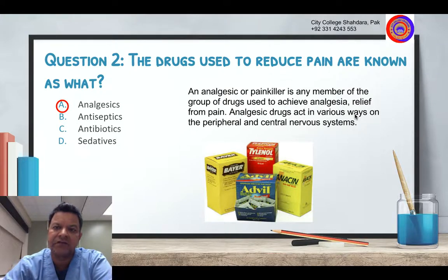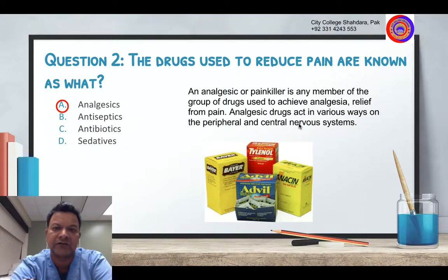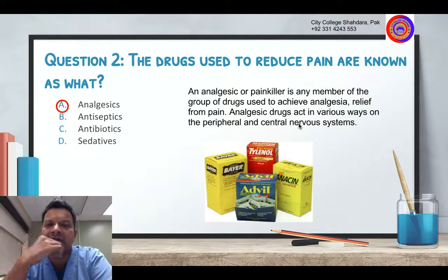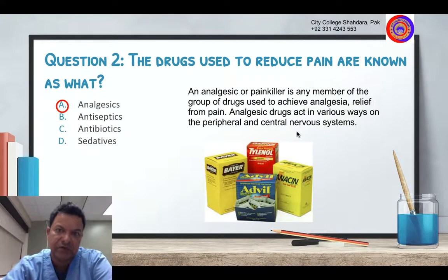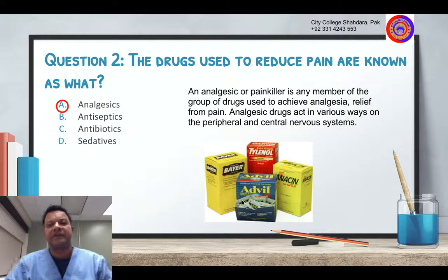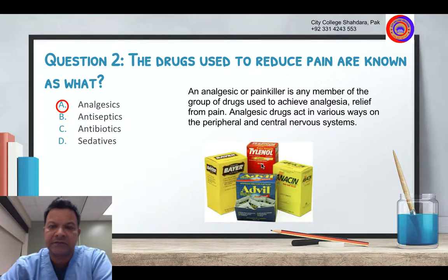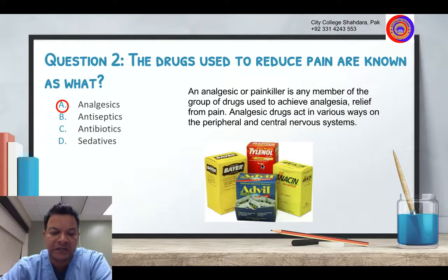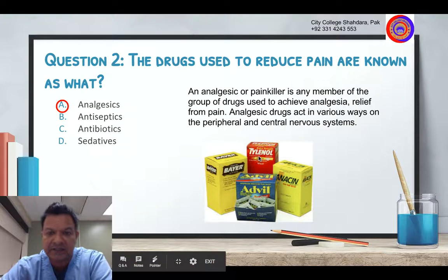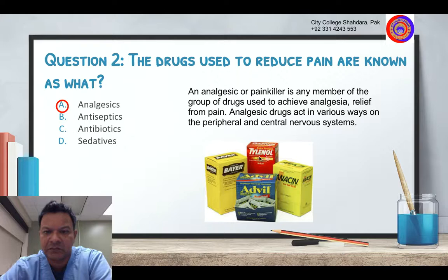Analgesic drugs act in various ways on the peripheral and central nervous system, because the sensation of pain is communicated by the brain or the peripheral nervous system. If that pathway is blocked, there is no pain. Common analgesics available in Pakistan include paracetamol, aspirin, Disprin, and ibuprofen. In America, ibuprofen is called Advil. Tylenol is very similar to paracetamol.